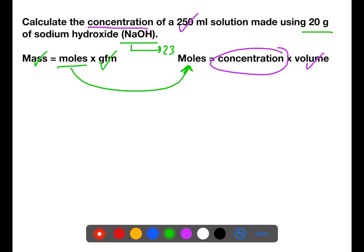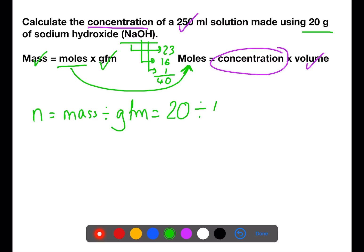First of all we need to calculate moles using the two pieces of information we know. The gram formula mass of sodium hydroxide is 23 plus 16 plus 1, which is 40. So to calculate the moles we have mass divided by gram formula mass: the mass is 20 and the gram formula mass is 40, so the number of moles being used is 0.5.